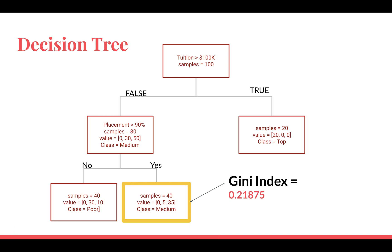When I complete the calculation, this is the number that I get: 0.21875. Now this number, although it is very low, it's still not zero, it's not a very pure node.